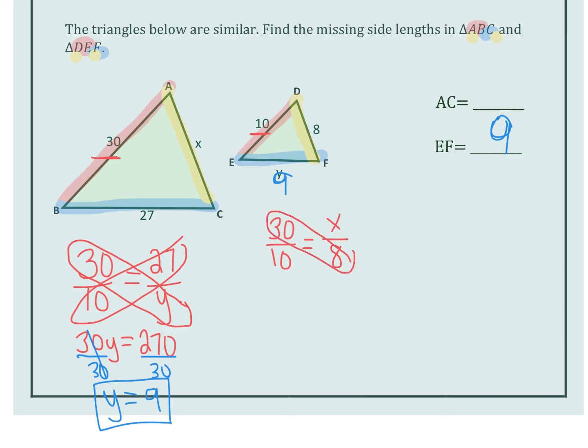Go ahead and cross multiply. 8 times 30 is 240. 10 times X is 10X. So inverse operation, I'm going to divide by 10 on both sides. Now I know that X is on the other side, but that's okay. 24 equals X is the same thing as X equals 24. Therefore, AC is equal to 24.